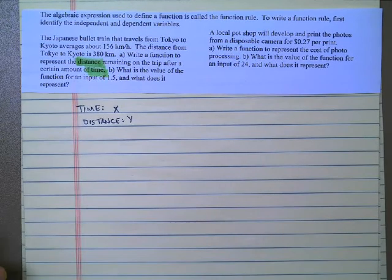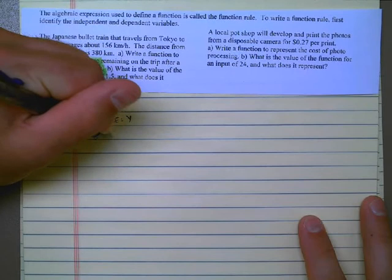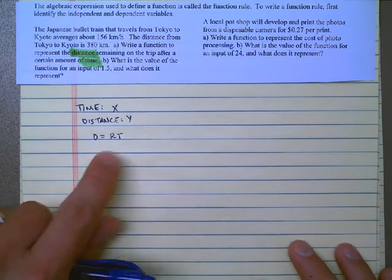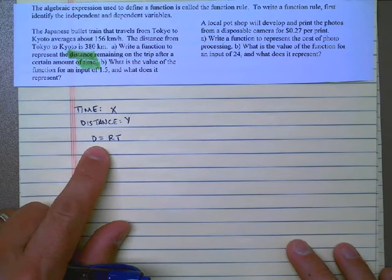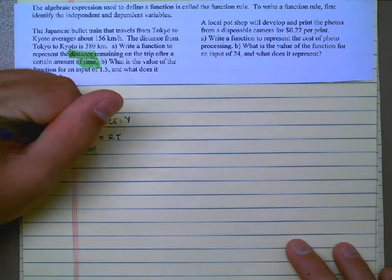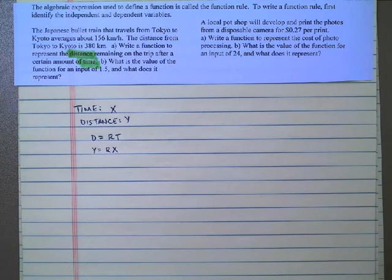So we need to write a rule that relates distance and time. If you pull back to your science classes, you know that distance is equal to rate times time. Time is our x value. Distance is our y value. Y is equal to the rate, the speed, times the x value. Maybe we can use those letters instead. It really doesn't matter. Those are just placeholders.